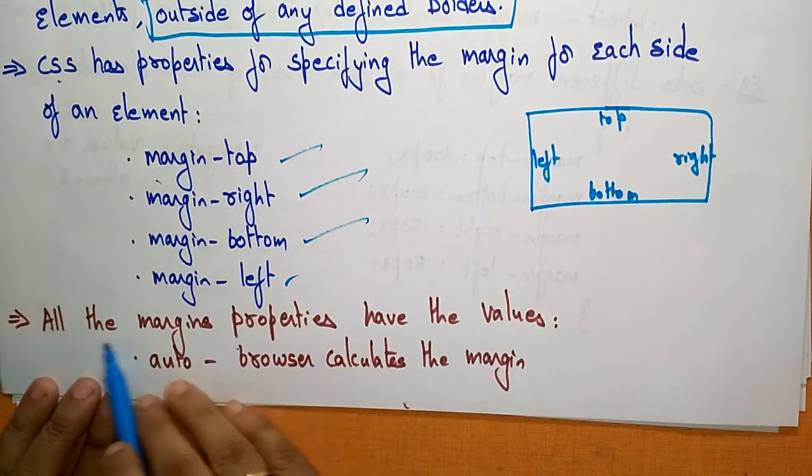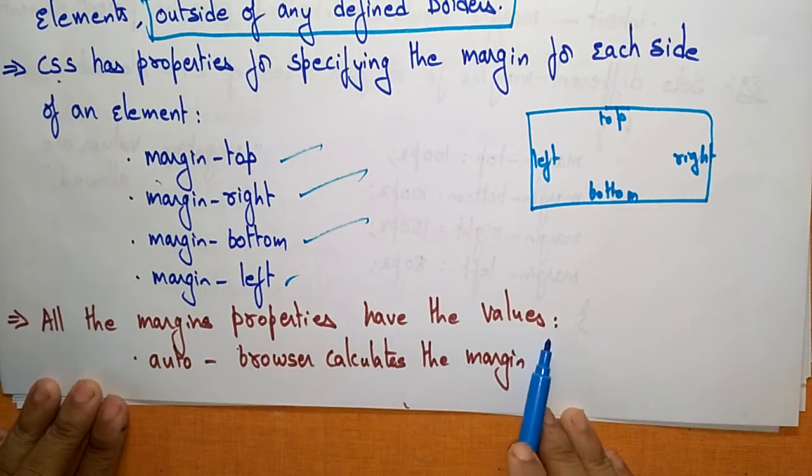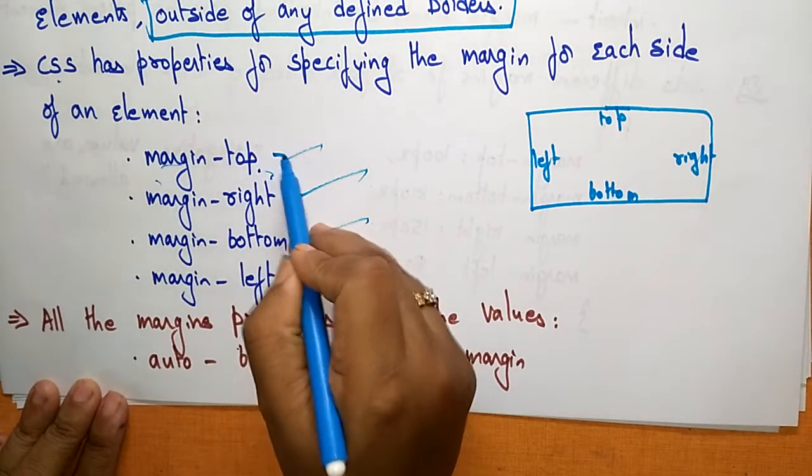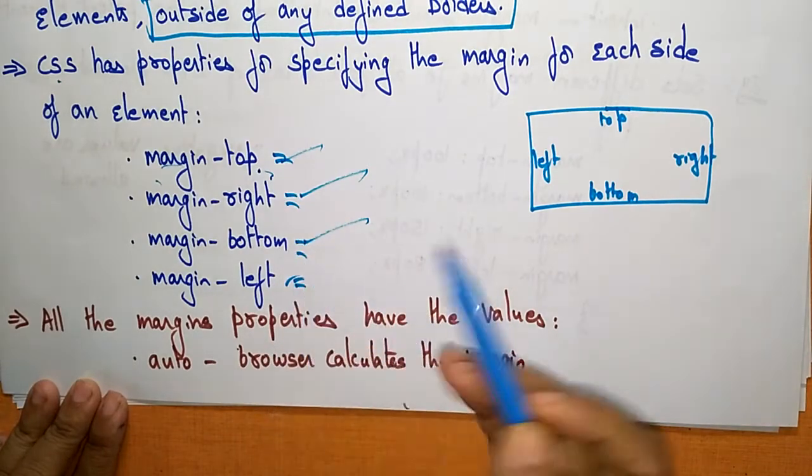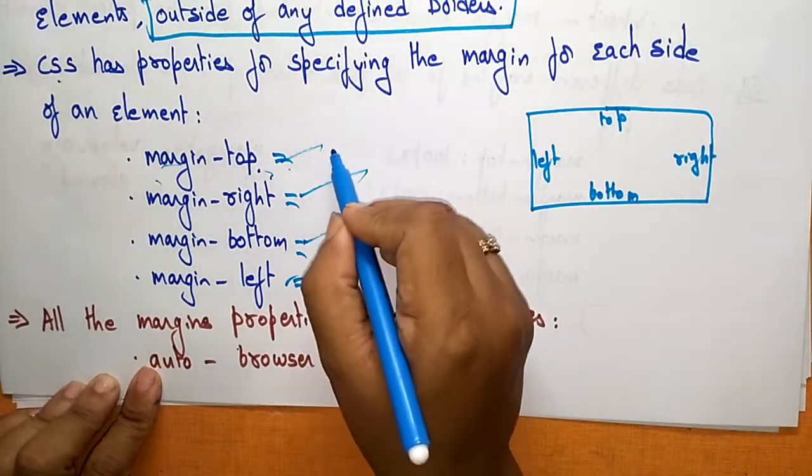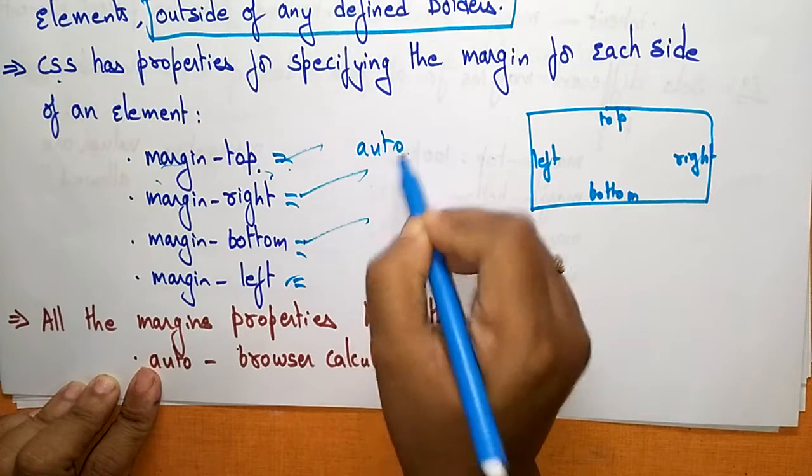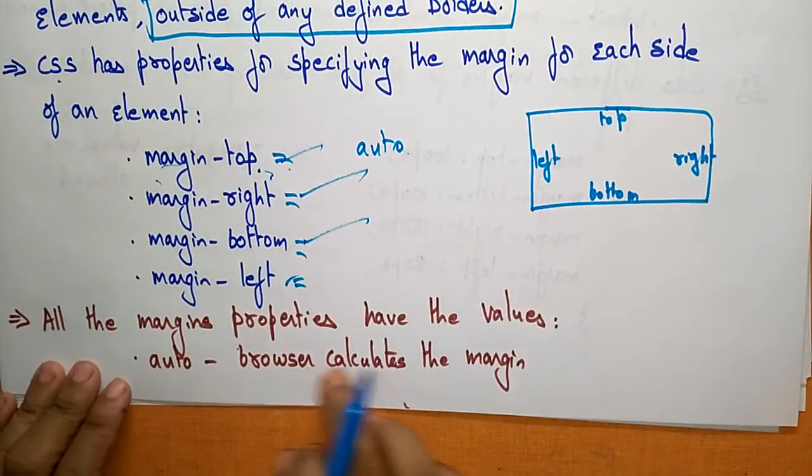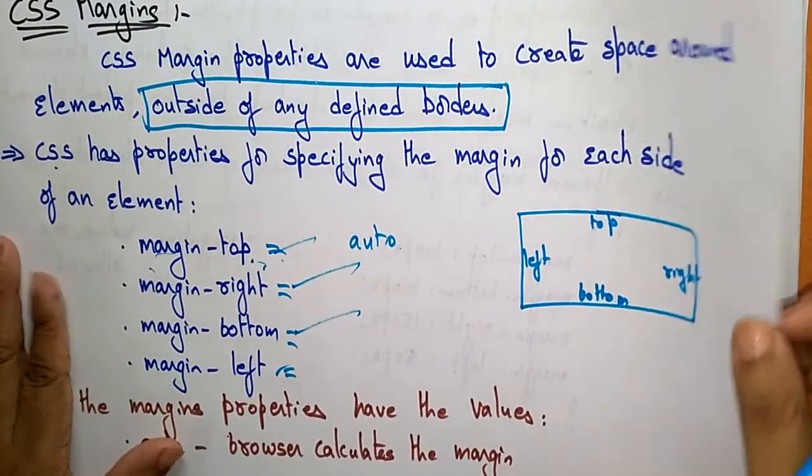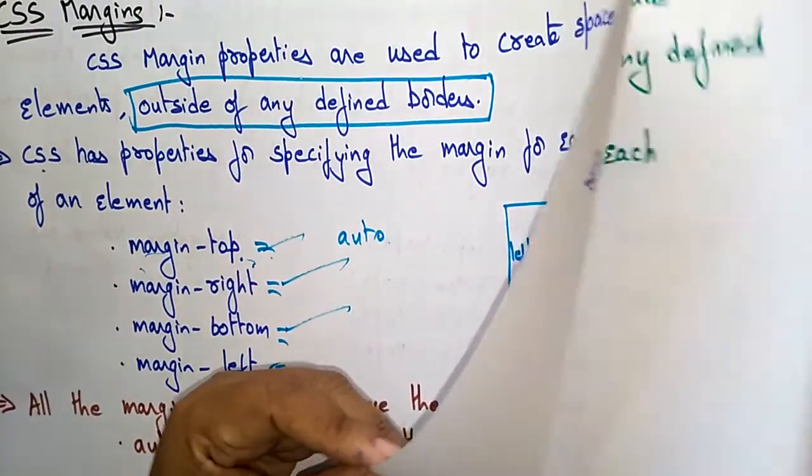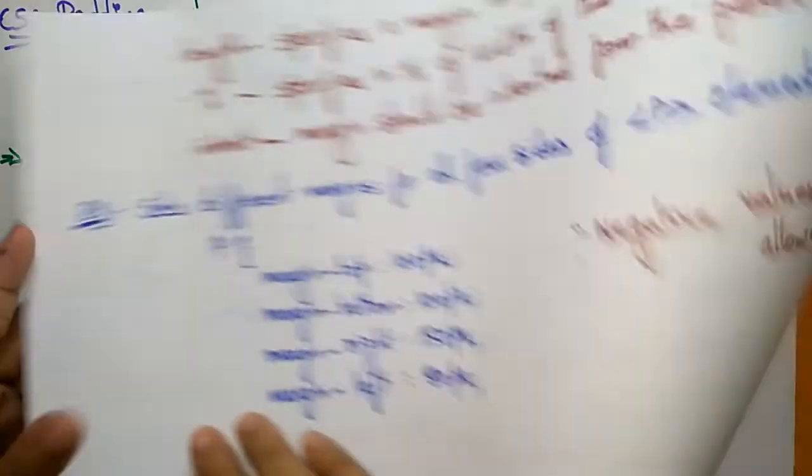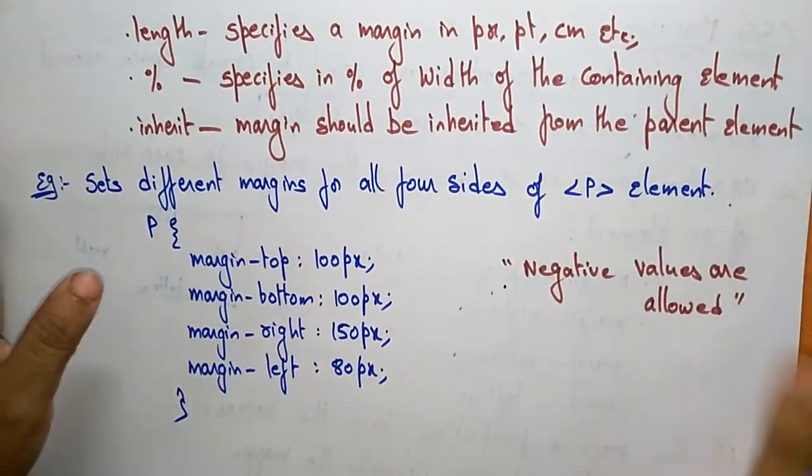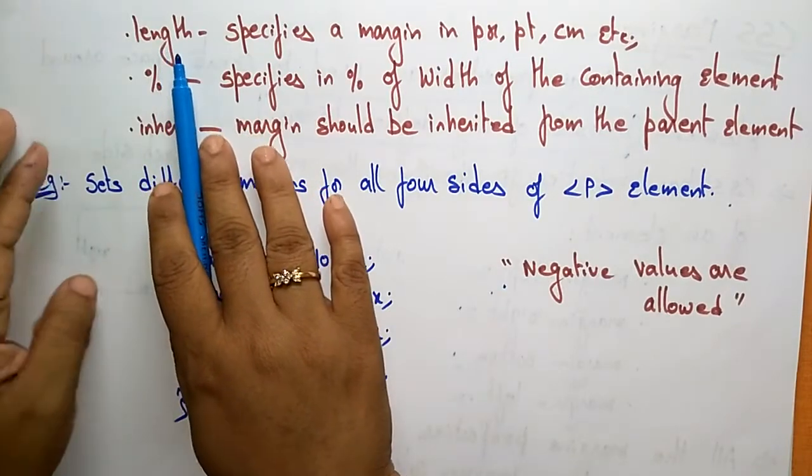All the margin properties have values. Whatever properties are taken, those properties have values. Let's take margin-top as auto. Auto means the browser calculates the margin. No need to mention the pixel size or the size of a page - you just write auto there. Then by default, the browser can select that. You can also use the value as length.